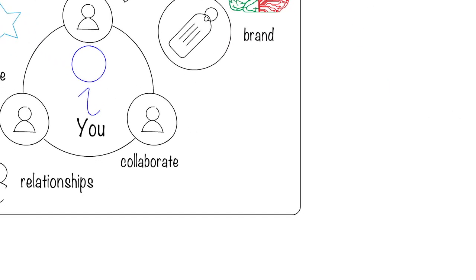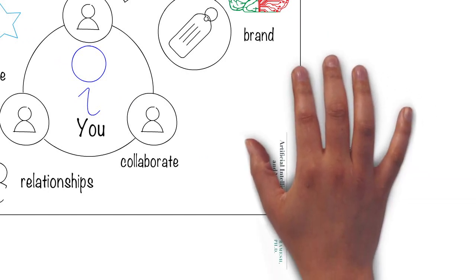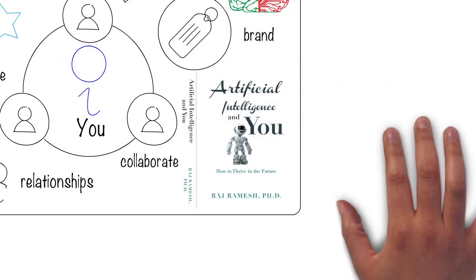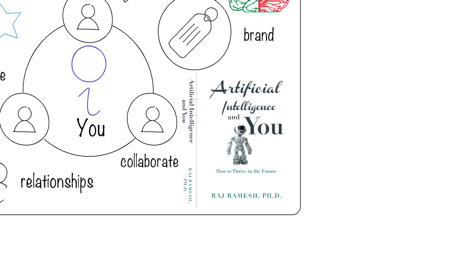To help you even more on this journey to a fantastic future, I'm soon releasing a book titled AI and You: How to Thrive in the Future. In this book, I'll help you visually model your own ecosystem to create your own map so that you can place yourself in a spot where you can thrive.